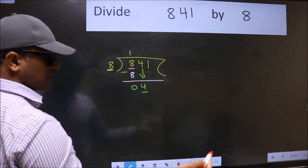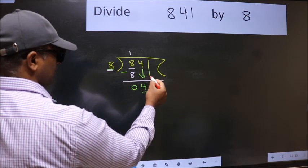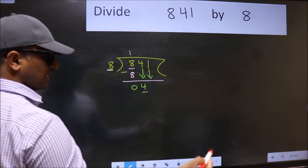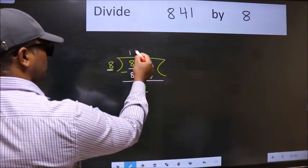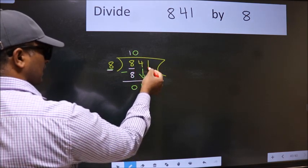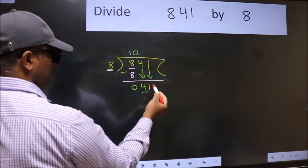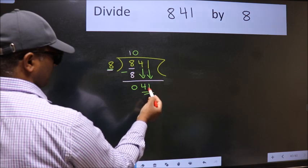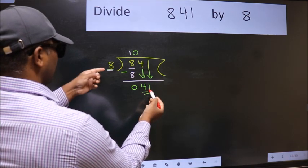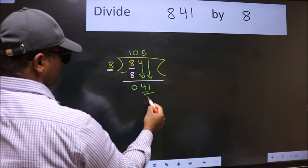So, we should bring down the second number. And the rule to bring down the second number is put 0 here. Then only we can bring this number down. So, 41. A number close to 41 in the 8 table is 8 fives 40.